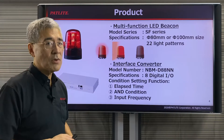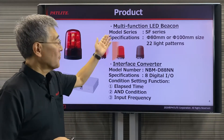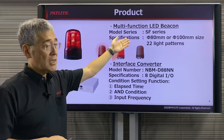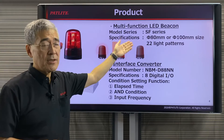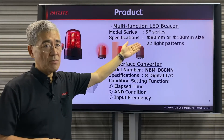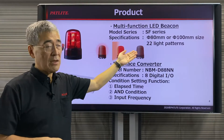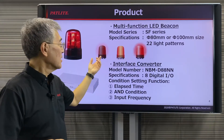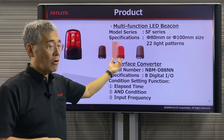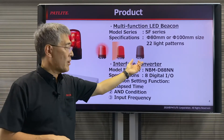We have two products we'd like to introduce you to. The first is the multi-function LED beacon, the SF series. It comes in 80mm and 100mm diameters. It has 22 light patterns, including blinking patterns, rotating patterns, and various flashing patterns.